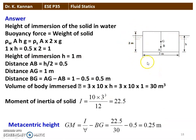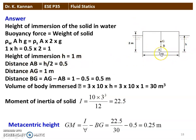This is the body of height 2 meter, length 3 meter. The height of immersion of the solid in water is calculated by equating the buoyancy force and weight of the solid. The buoyancy force equals rho_w × A × h × g, and the weight of the solid is rho_s × A × 2 × g. Simplifying with rho_w = 1, area and g cancel, giving h = 0.5 × 2 = 1 meter. The height of immersion is 1 meter. Distance AB: A is the base, B is the center of buoyancy; from the base, the distance AB = h/2 = 0.5. Distance AG = 1 meter (center of gravity at half of 2 m height). Distance BG = AG − AB = 1 − 0.5 = 0.5.